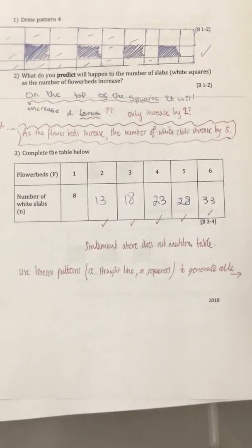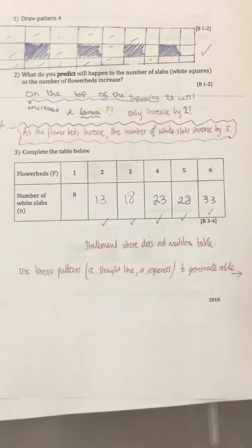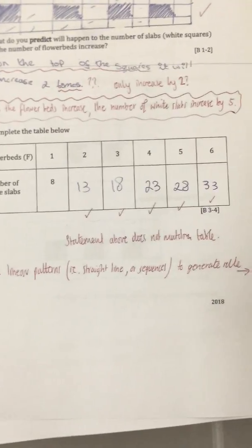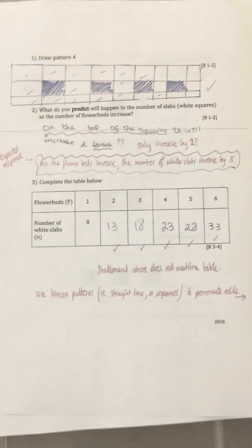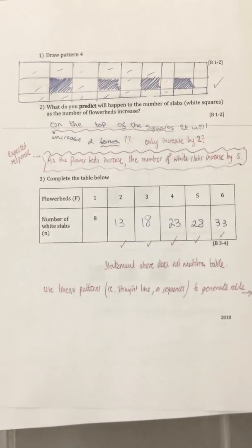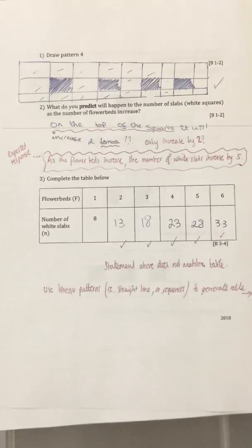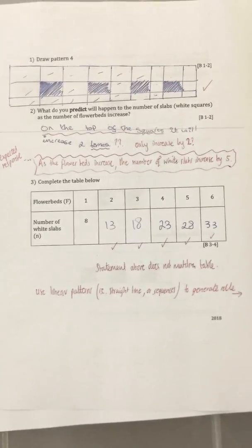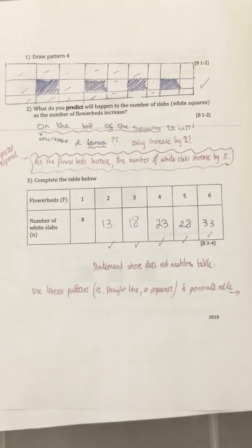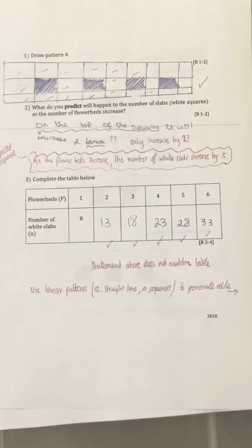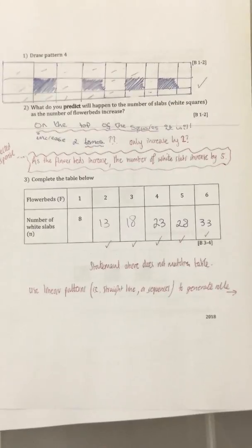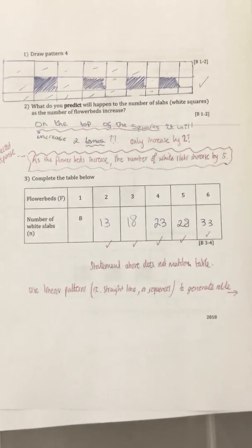I've explained to the student to use linear patterns — a straight line or sequence — to generate the rule. This is where it goes on to level 5 to 6 for grade 6: can they use the table to come up with an equation that allows them to predict for maybe 30 or 150 flower beds?